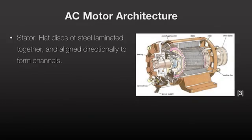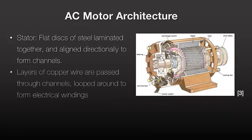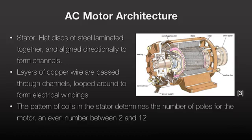The stator consists of a series of flat steel discs laminated together. They are aligned directionally to form channels for the stator windings. These windings consist of layers of copper wire, which when passed through the channels create loops to form an electromagnet. The pattern of coil windings in the stator determines the number of poles for the motor, an even number usually between 2 and 12.